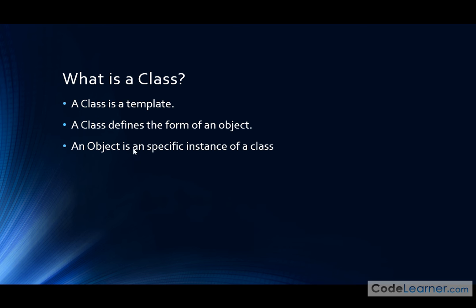And here's the kicker: an object is a specific instance of a class. It's just the same relationship you might have already guessed. When you have a template, you define what something's supposed to look like, and then if you want to make copies or different types of objects, you would just follow the template. When we create an object in Java or any programming language, we're basically using the template to create a new object with similar characteristics spelled out in the template.